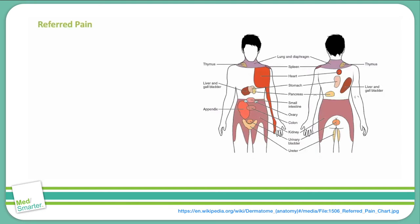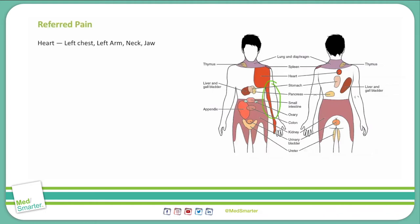Let's run through some high-yield examples of referred pain, starting with the heart. Pain originating from problems in the heart is classically felt in the left chest. It can radiate to the left arm and sometimes the left side of the neck and jaw. Things like myocardial infarctions and pericarditis can classically be felt in these areas. Also keep in mind that pain from the heart can be felt in the back as well.